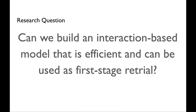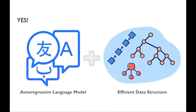And I think the answer is yes. The idea is that if you use an autoregressive language model and pair it with an efficient data structure that drives the generation towards all the knowledge in your corpus, you can actually achieve this goal.